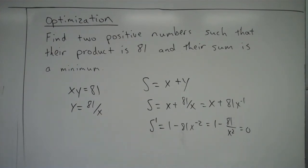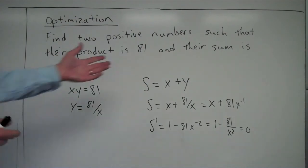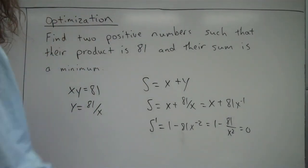But x equals zero makes no sense here. There's no way to multiply two numbers together, one of them being zero, and get 81. So zero is not going to work.